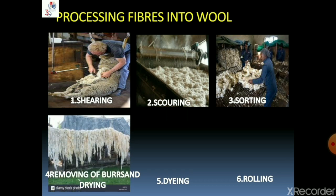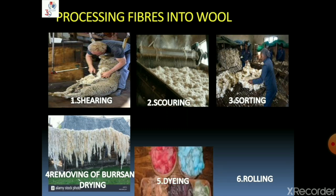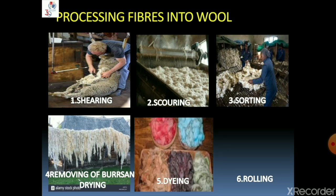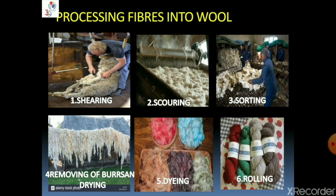Next we will read about removing of burrs and drying. In this step, the burrs present in the hair of the sheep are picked out, then the hair is cleaned and dried. The product so obtained is the wool that can now be converted into fibers. Next step is dyeing or coloring — the fibers are dyed in different colors. The last step is rolling, where the wool obtained is straightened out, combed, and rolled into yarns. Now it is ready to be sold in the market.